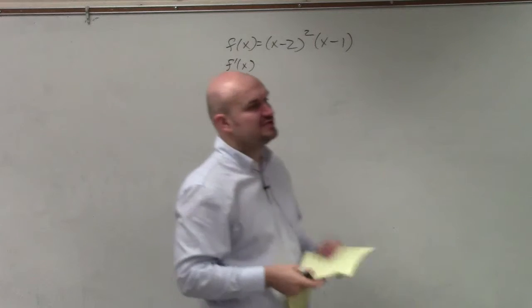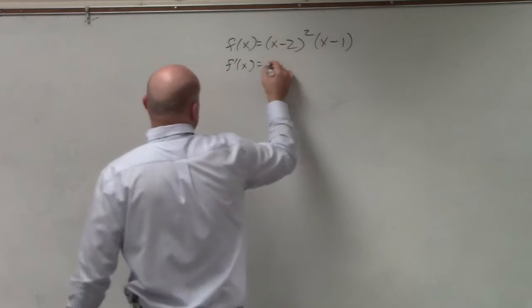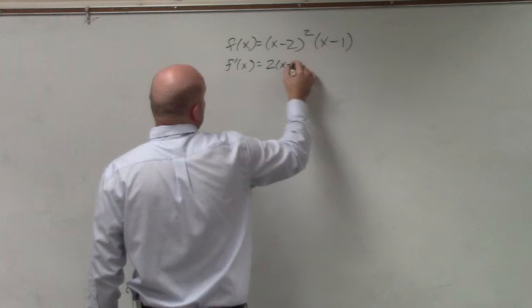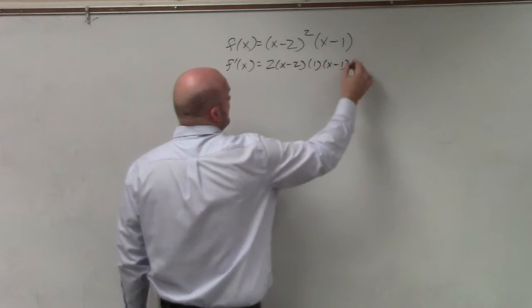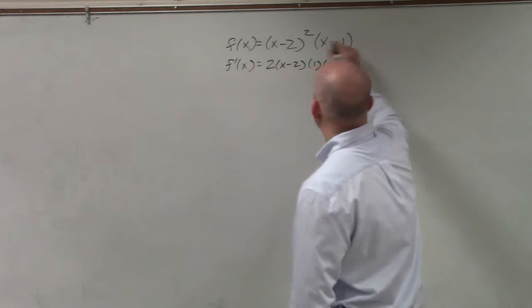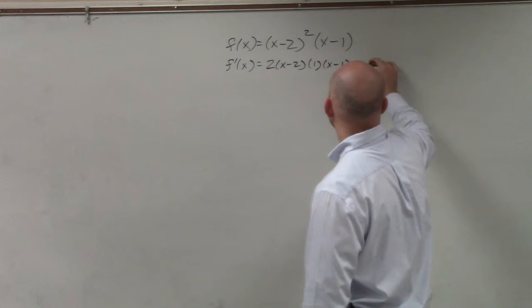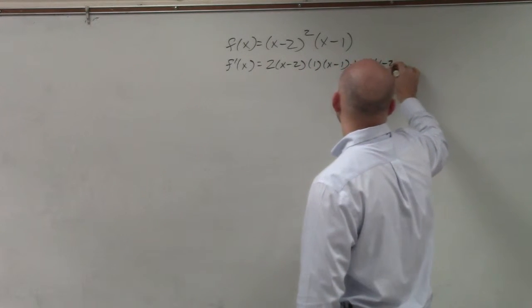I am going to use the product rule. So I'm going to take the derivative of my first function, which I'm going to have to use the chain rule, and then times my second function, add the derivative of my second function, which is just 1, times (x - 2)².